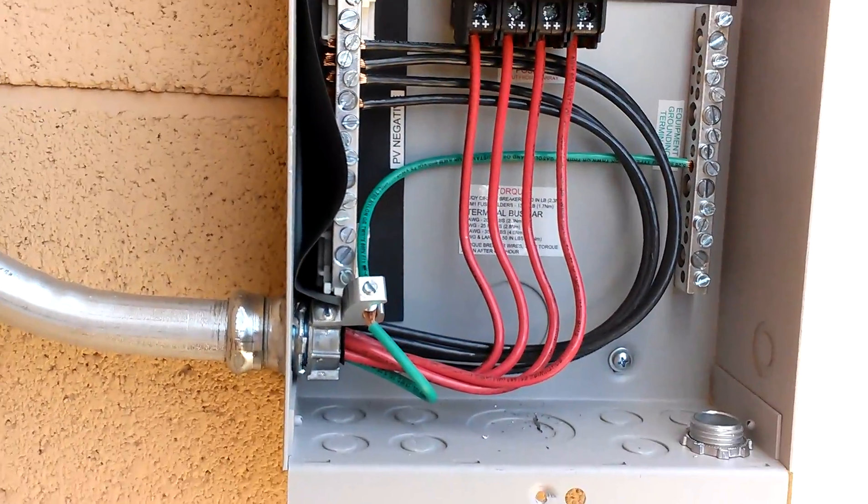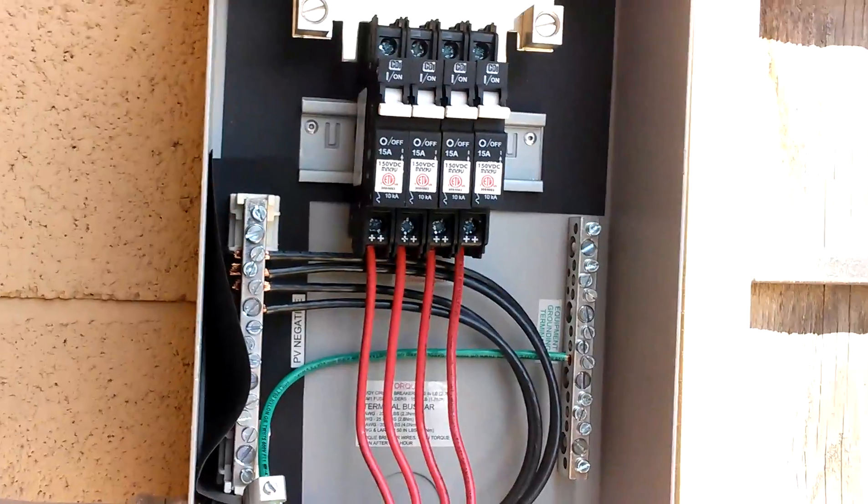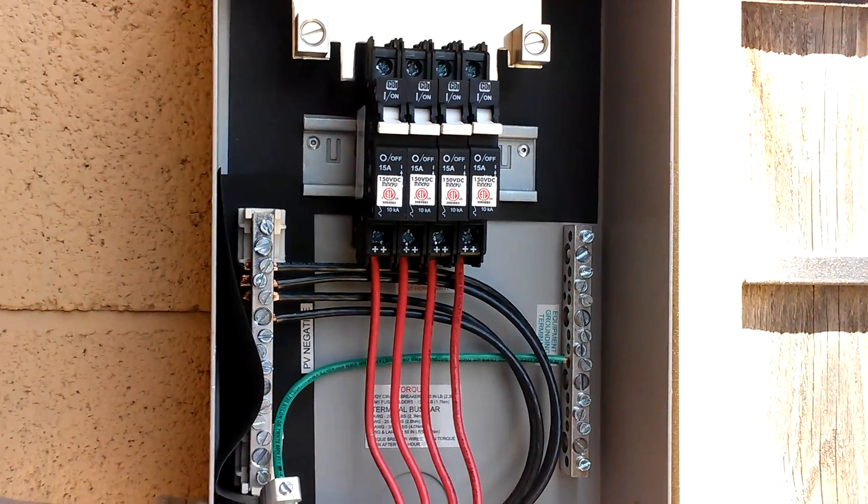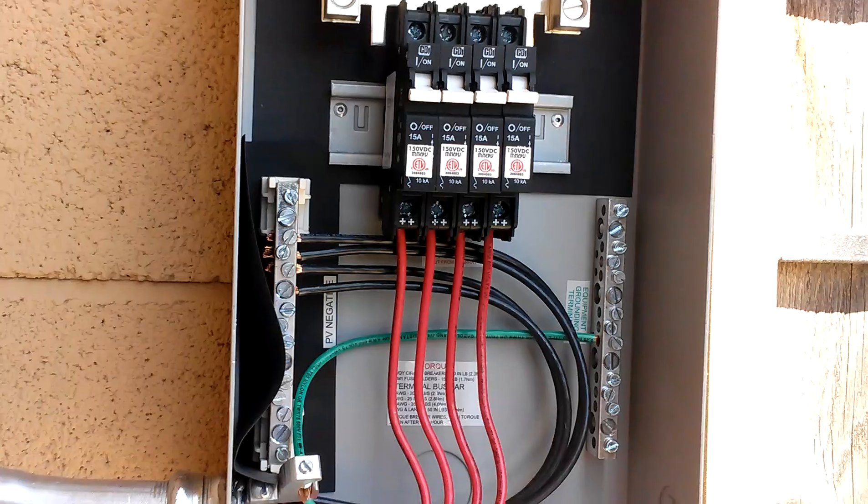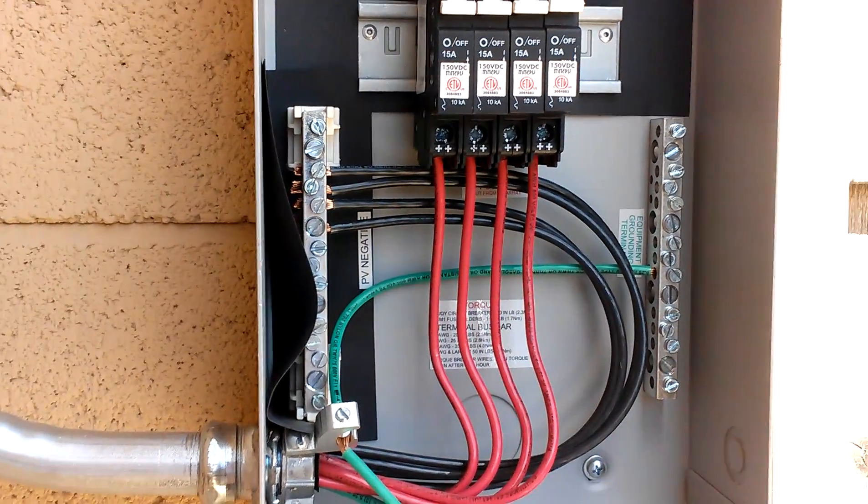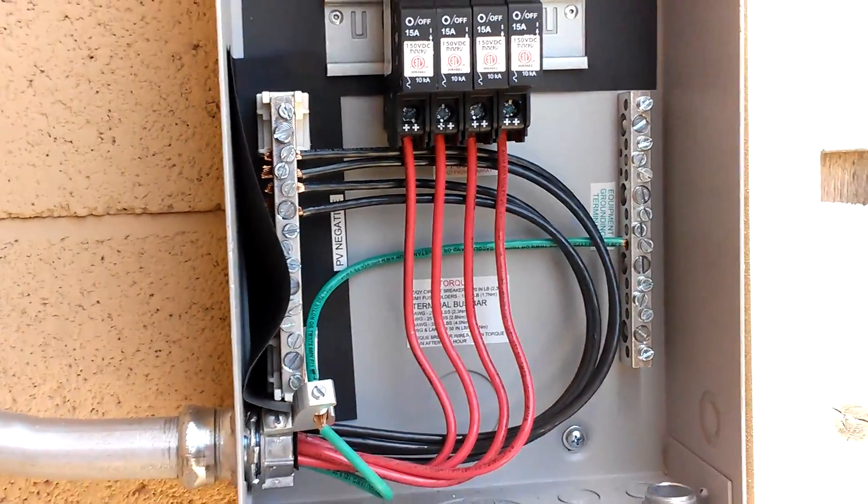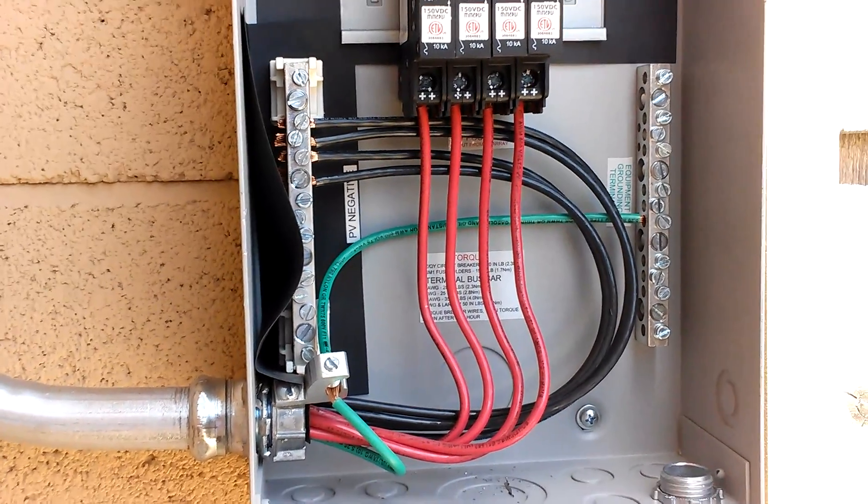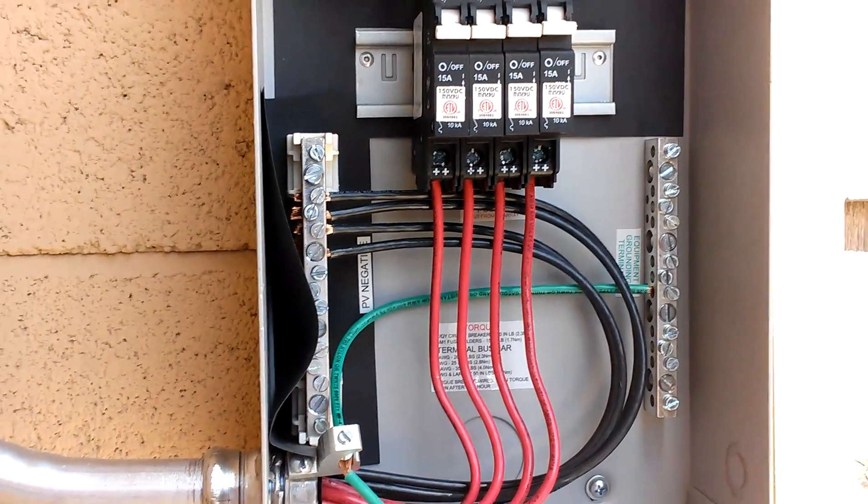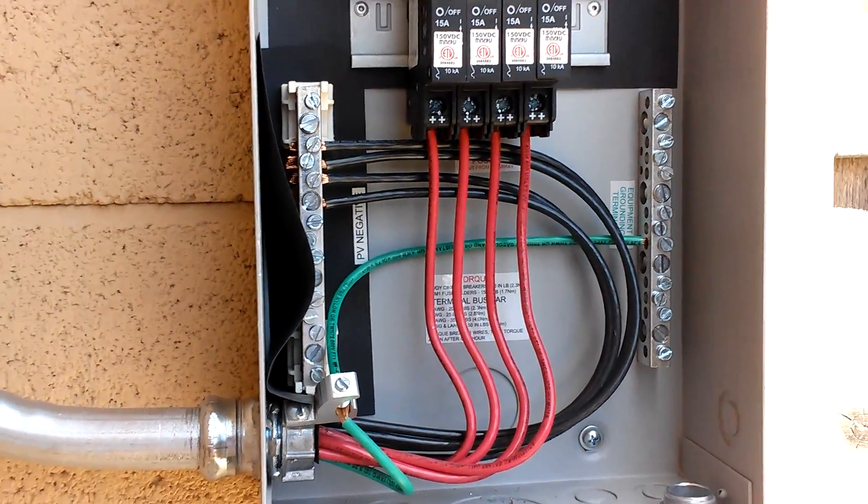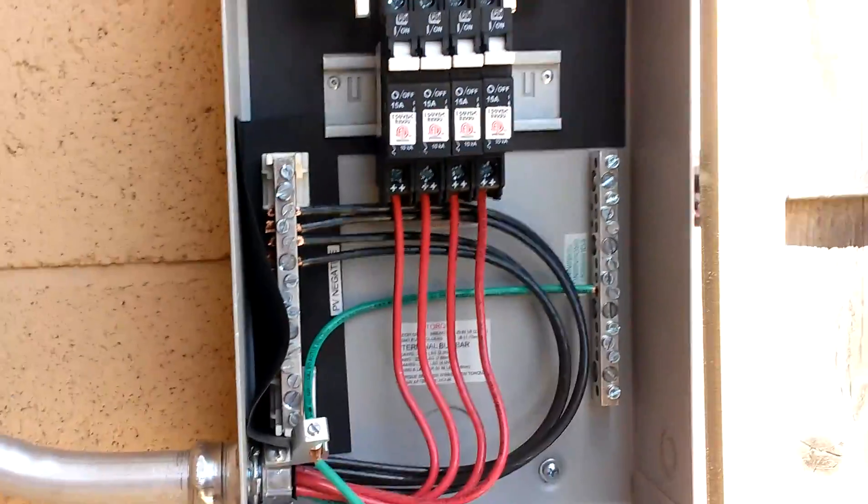That is the first leg of how I decided to do it. Put my array up first, all my panels up on my roof, get everything wired over to the combiner box. Please subscribe, give me a thumbs up, let me know if I missed anything or if anybody's got any ideas.